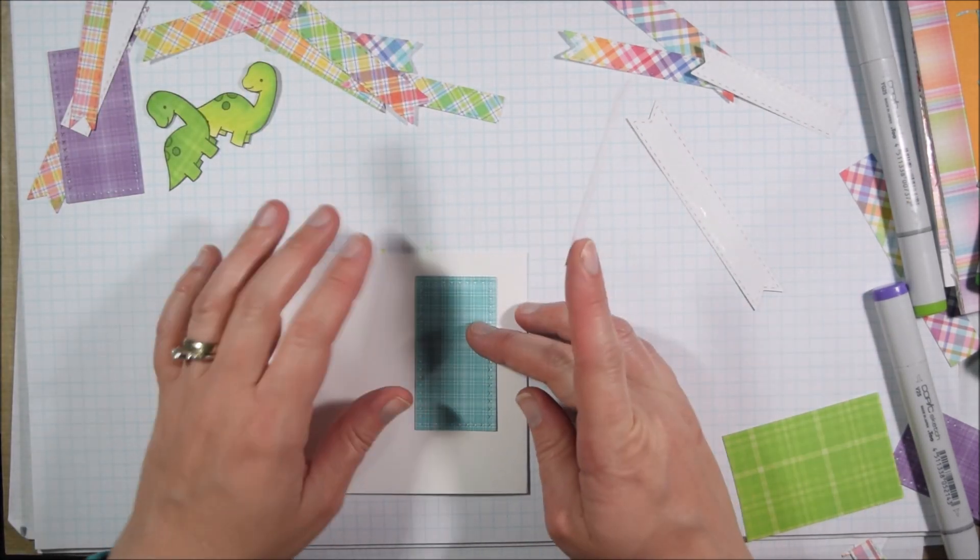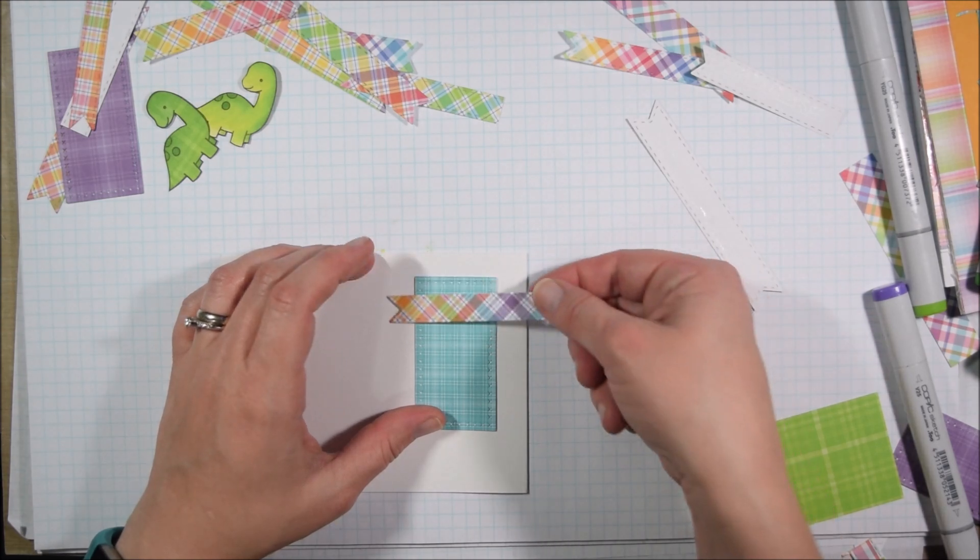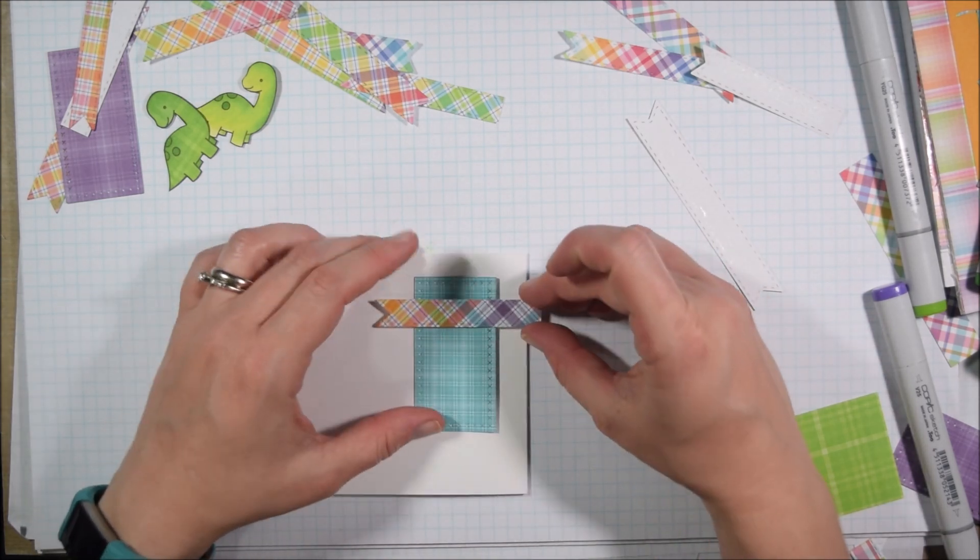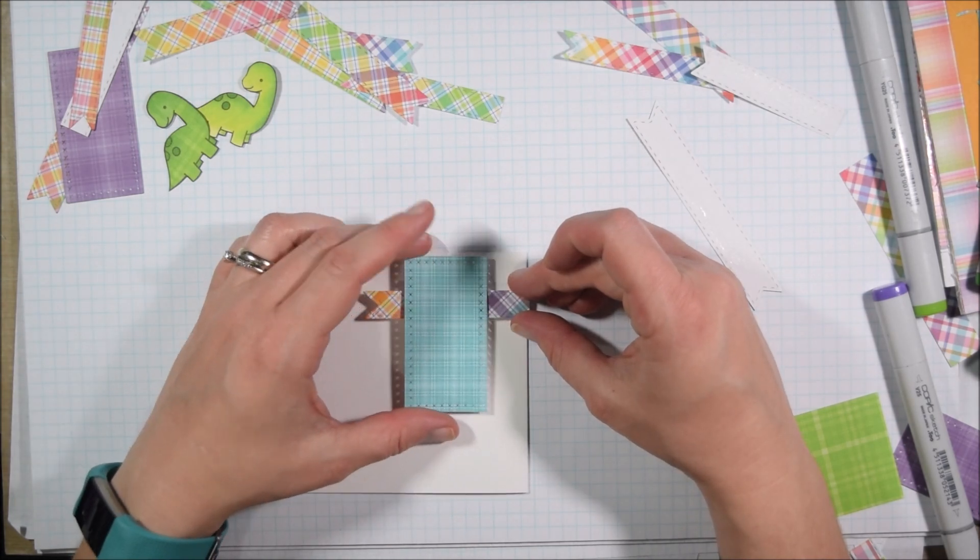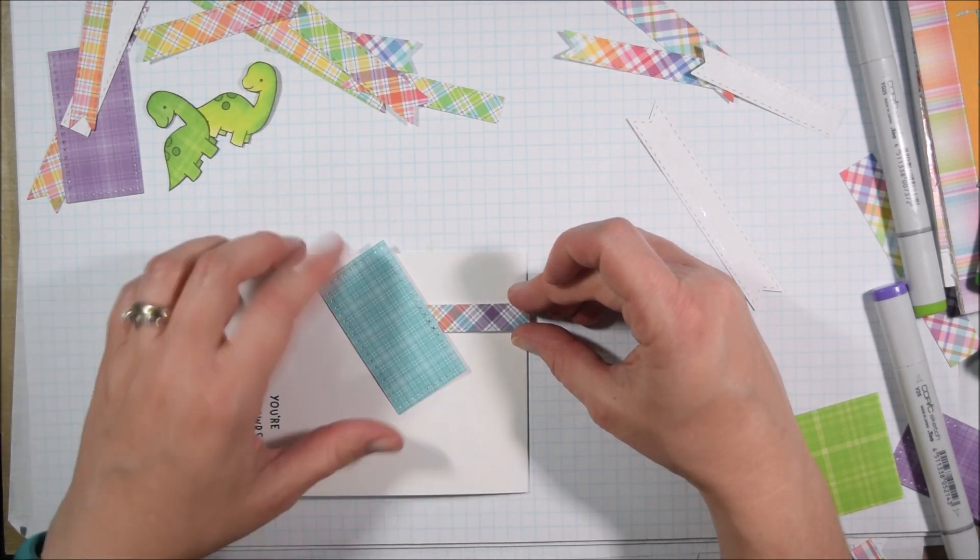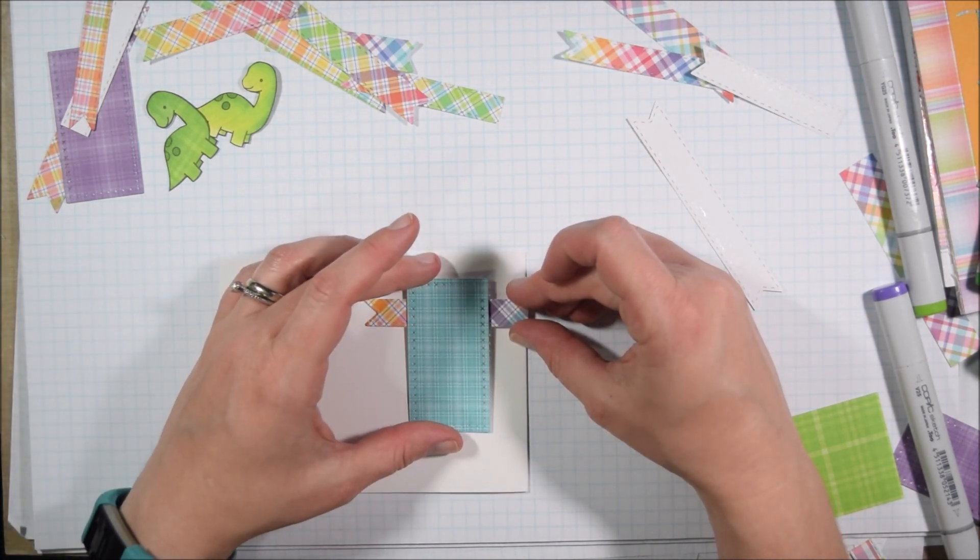So with that in mind, I'm going to put the green dinosaurs on the blue paper, and then the purple dinosaurs on the green, and the blue onto, I don't know, I'm just going to kind of rotate around essentially.